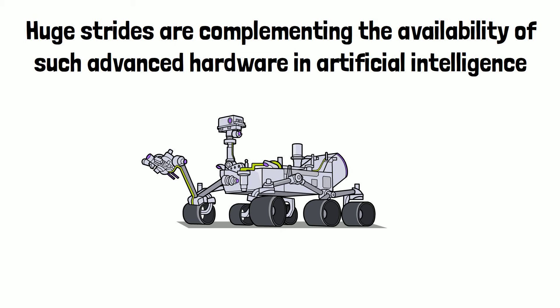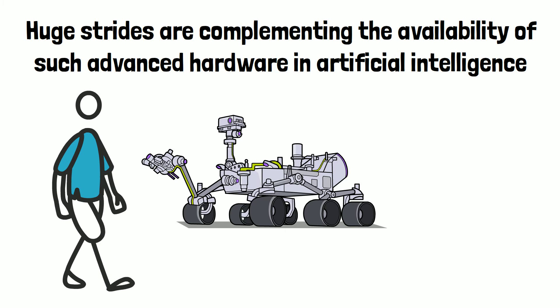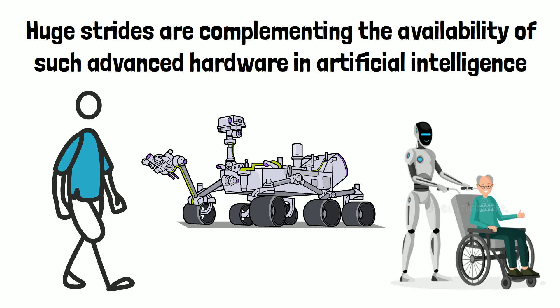Huge strides are complementing the availability of such advanced hardware in artificial intelligence. We're developing robots that can recognize individual people and react to movements and facial expressions with appropriate emotional responses. Industry experts already envisage robots providing care for an aging population and augmenting services in several areas.